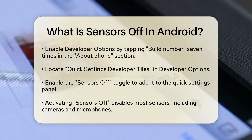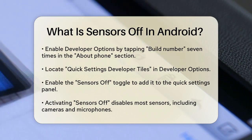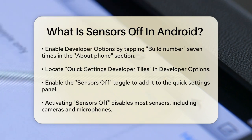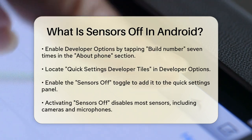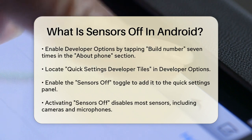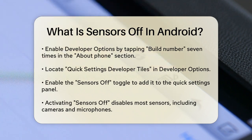When you enable the Sensors Off feature, most of your phone's sensors are turned off. This includes the cameras, microphones, accelerometers, gyroscopes, and even light sensors. This means apps won't be able to use these sensors, so you won't be able to take pictures, record videos, or use voice commands.